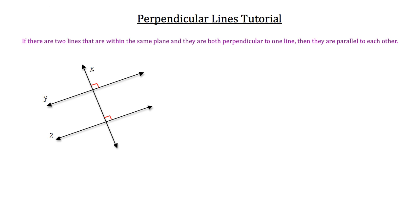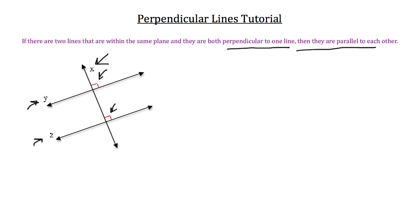Let's take a look at the diagram. Let's say that you have two lines in the same plane — the plane being the screen of your monitor. The two lines are line Y and line Z. Now, both line Y and Z are perpendicular to line X, as indicated by the red boxes. If both lines Y and Z are perpendicular to one line, line X, then they must be parallel to each other.